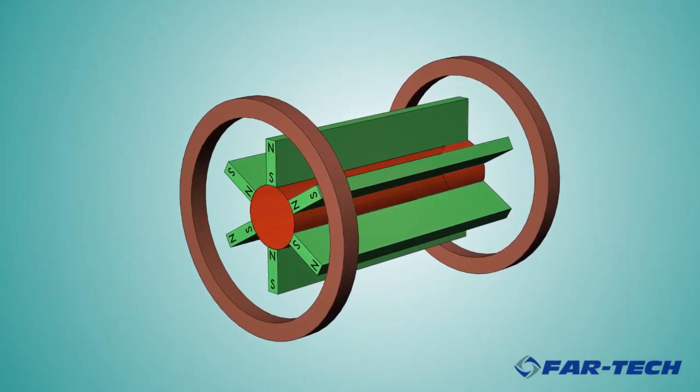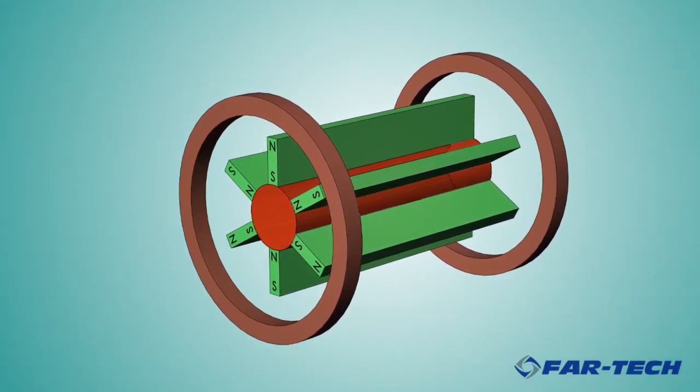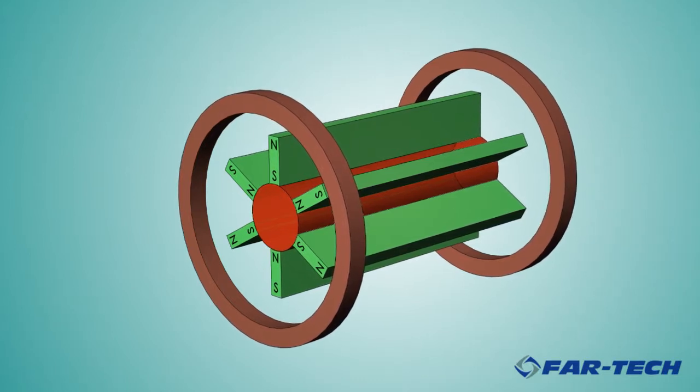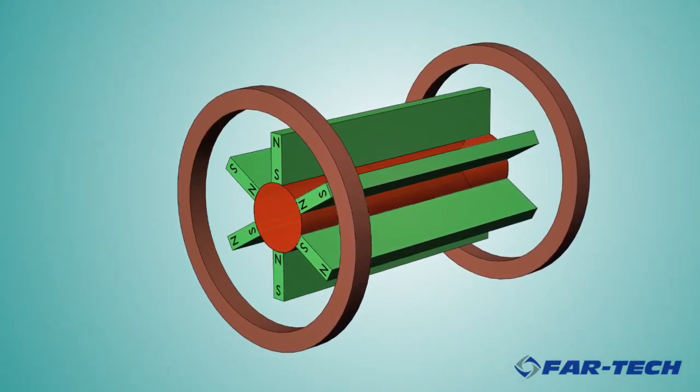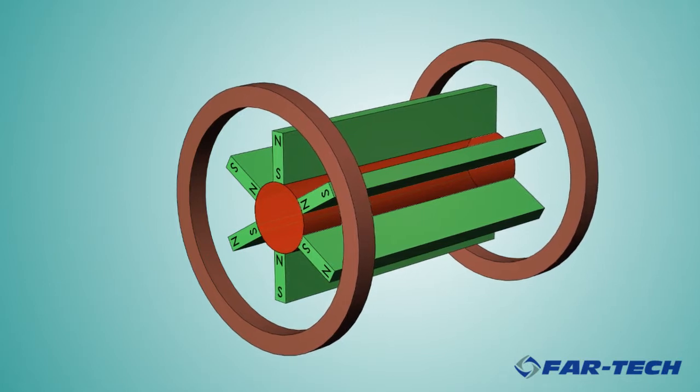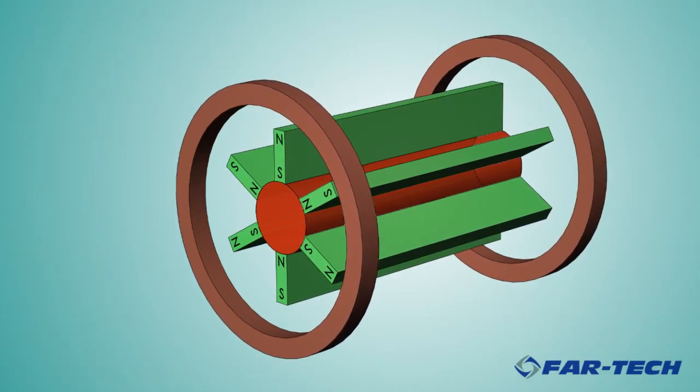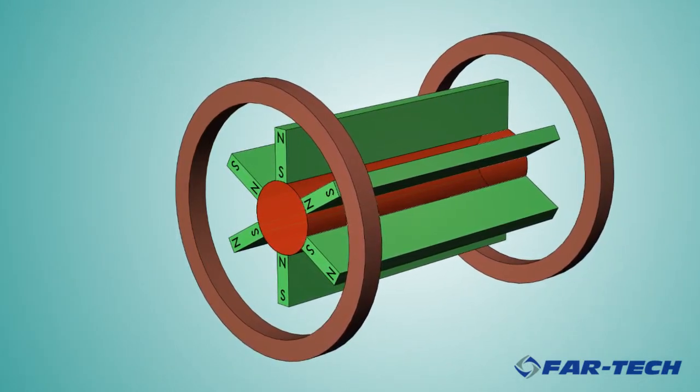Here the ECRIS magnetic field is generated by two large parallel ring coils and bar magnets. The electrons are heated by electron cyclotron resonance with an external RF power source, and the ions are charge bred by impact ionization with the electrons. The multiply charged ions are then extracted.